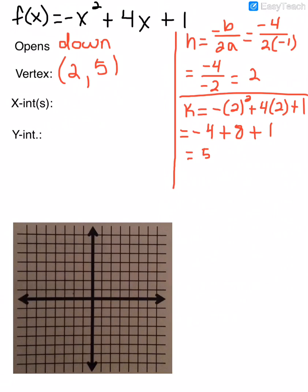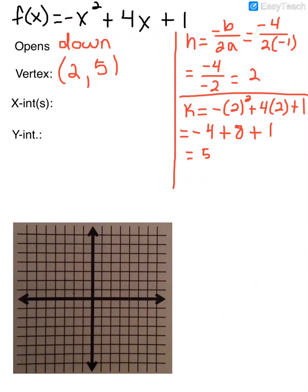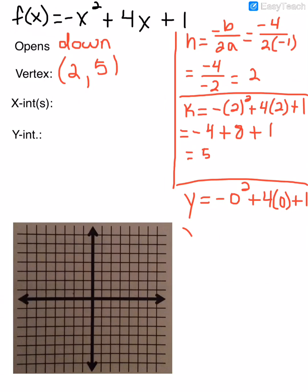To find my x-intercepts, if I plug in 0 for y and solve for x, I can tell that this function is not factorable because there are no products of 1 that will add or subtract to give me 4. Since it's not factorable, using the quadratic formula would give me irrational numbers like square roots that I won't be able to graph easily. So finding x-intercepts won't help me graph this. For the y-intercept, I plug in 0 for x in both spots — negative 0 squared is 0, plus 4 times 0 is 0, plus 1 — so I just get 1. My y-intercept is 0, 1.